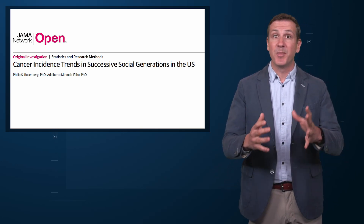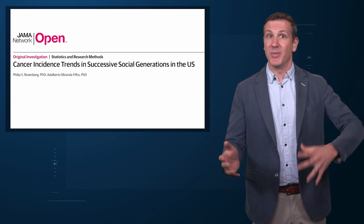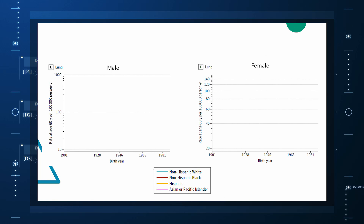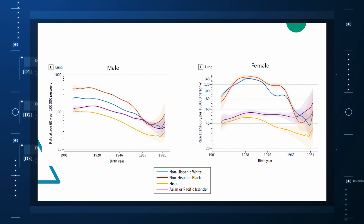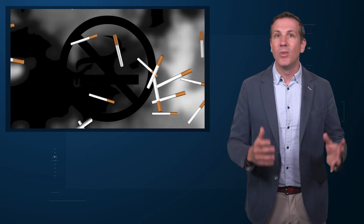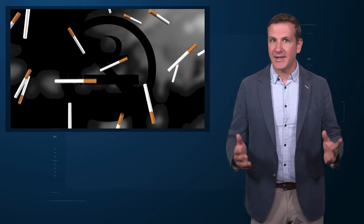This cohort spanned birth years from 1908 to 1983, from the greatest generation to Gen X. The key data elements are age at cancer diagnosis and year of birth, allowing the researchers to examine how rates of cancer at a given age changed over time. Here are the rates of lung cancer at age 60 among men and women as a function of birth year. People born in more modern times have a lower risk of getting lung cancer by the time they turn 60 — the campaign against smoking has been one of the more successful public health campaigns over the last 50 years.